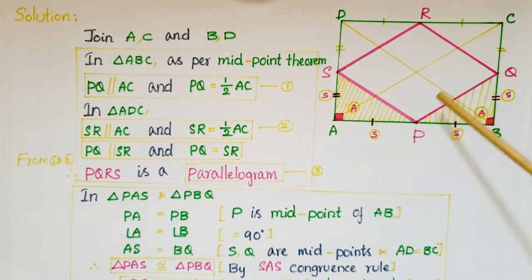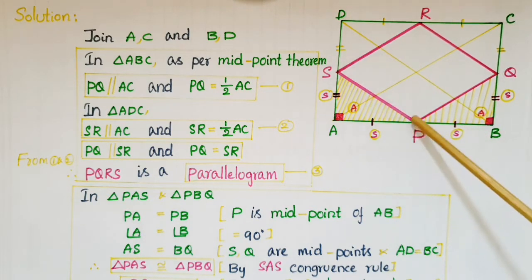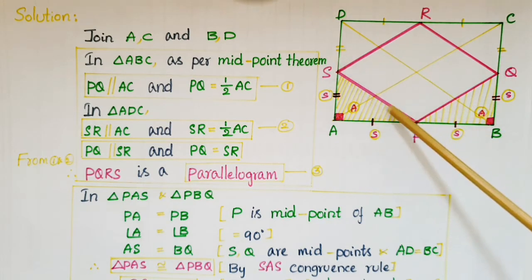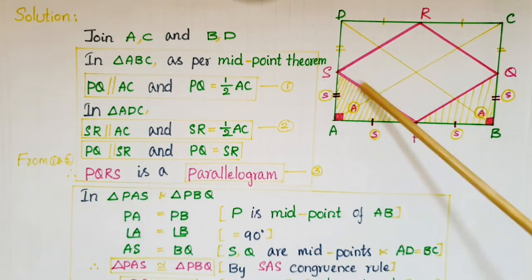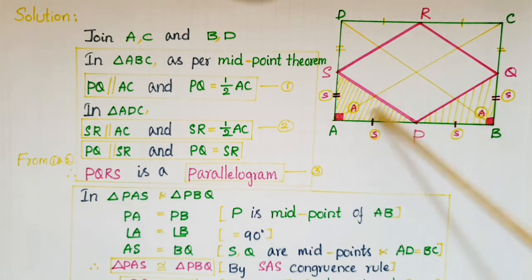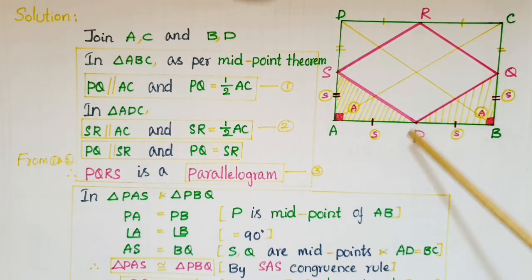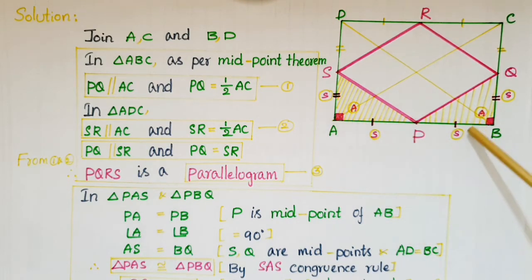Now to prove PQRS is a rhombus, we have to prove that one pair of adjacent sides is equal. Here I have taken PS and PQ — these are adjacent sides of this parallelogram. PS and PQ are sides of these two triangles. Take triangles PAS and PBQ. PA is equal to PB because P is the midpoint of side AB of the rectangle, as given in the problem.